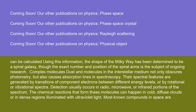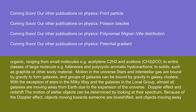Complex molecules: dust and molecules in the interstellar medium not only obscure photometry, but also cause absorption lines in spectroscopy. Their spectral features are generated by transitions of component electrons between different energy levels, or by rotational or vibrational spectra. Detection usually occurs in radio, microwave, or infrared portions of the spectrum. The chemical reactions that form these molecules can happen in cold, diffuse clouds, or in dense regions illuminated with ultraviolet light. Most known compounds in space are organic, ranging from small molecules such as acetylene (C₂H₂) and acetone (CH₃)₂CO, to entire classes of large molecules such as fullerenes and polycyclic aromatic hydrocarbons, to solids such as graphite or other sooty material.